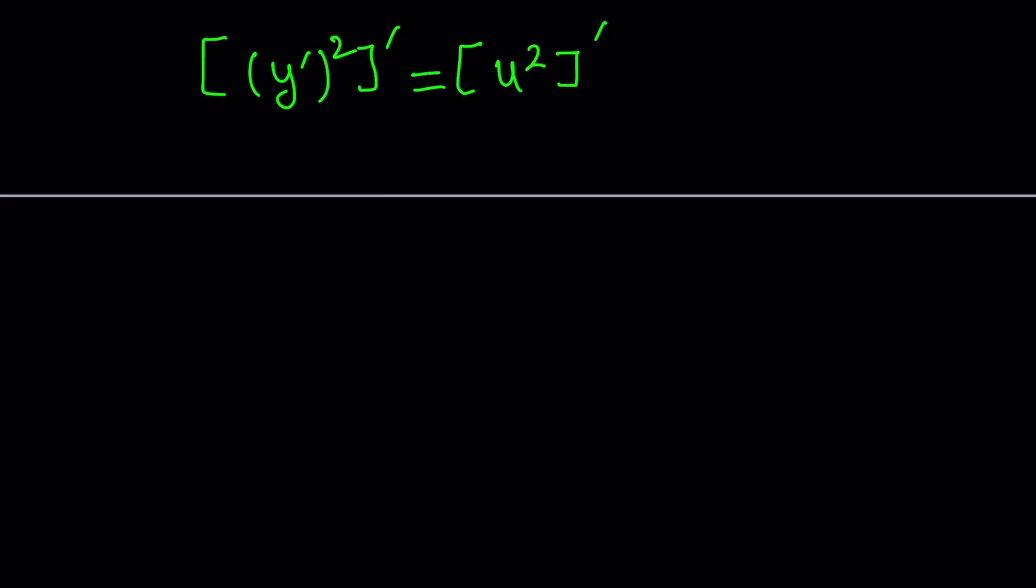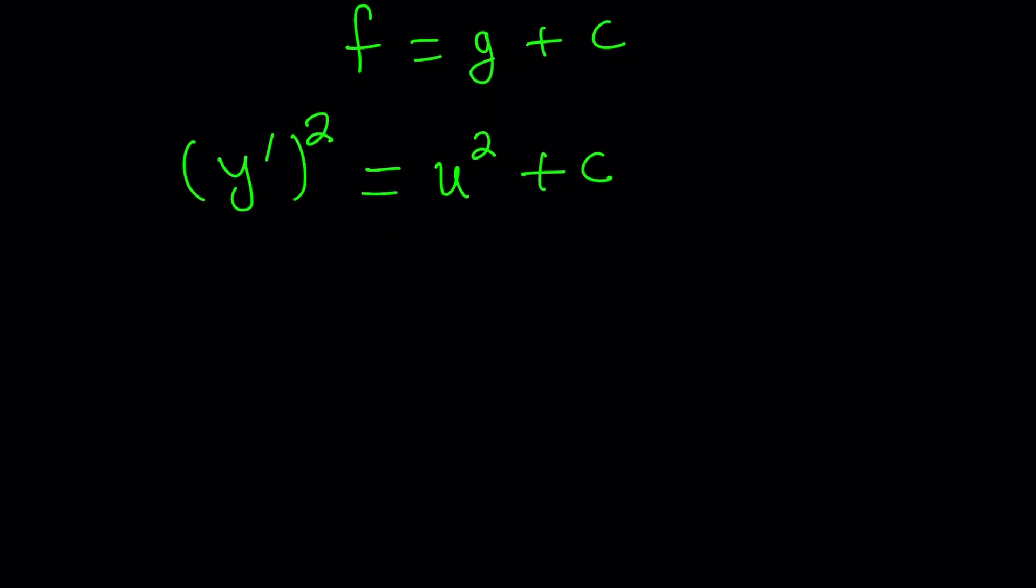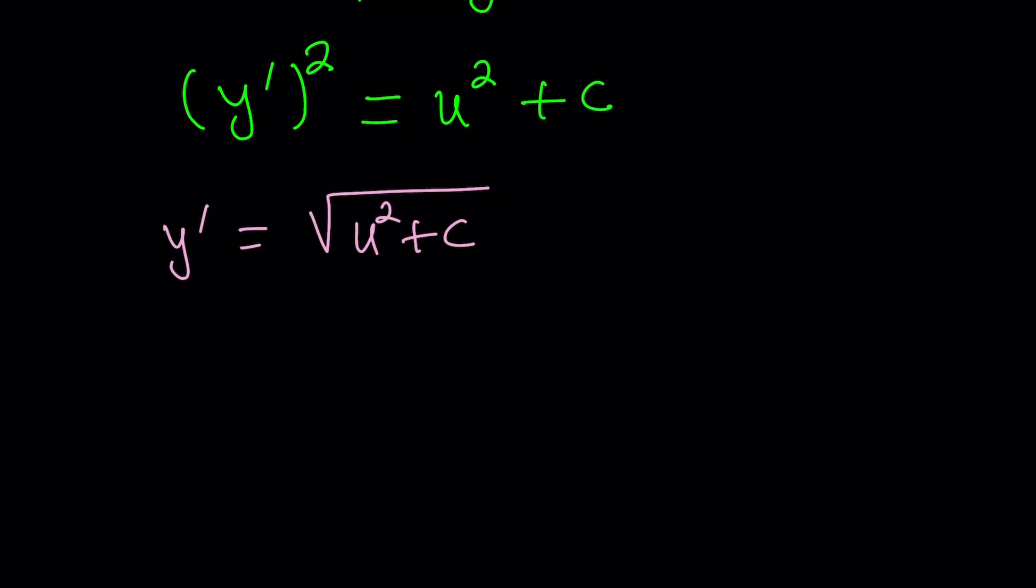Now, we have the derivative of a function on one side and the derivative of another function on the right hand side. If you integrate both sides, you're going to get f equals g, of course, up to a constant. We're going to integrate both sides. This is going to give us y prime squared equals u squared plus a constant. This is a huge improvement. Now, we're going to take square roots. So, y prime from here can be written as the square root of u squared plus c. Now, let's back substitute what is u. u is tangent y. So, this is going to be the square root of tangent squared y plus c.